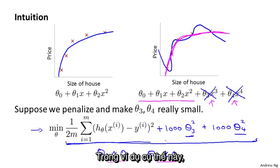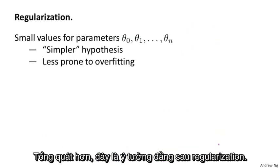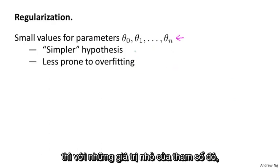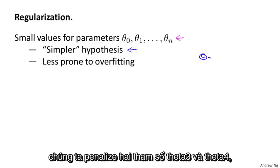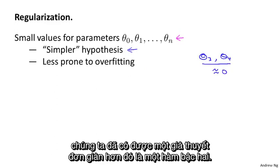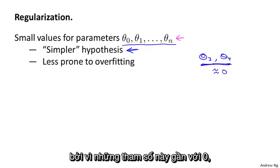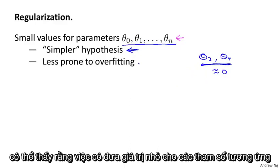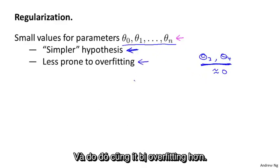And so we end up with essentially a quadratic function, which is good because it's a much better hypothesis. In this particular example, we looked at the effect of penalizing two of the parameter values being large. More generally, here's the idea behind regularization. If we have small values for the parameters, then having small values for the parameters will usually correspond to having a simpler hypothesis. So for our last example, we penalized just theta 3 and theta 4. And when both of these were close to 0, we wound up with a much simpler hypothesis that was essentially a quadratic function. But more broadly, if we penalize all the parameters, we can think of that as trying to give us a simpler hypothesis as well. It's possible to show that having smaller values of the parameters corresponds to usually smoother functions as well that are simpler and which are therefore also less prone to overfitting.